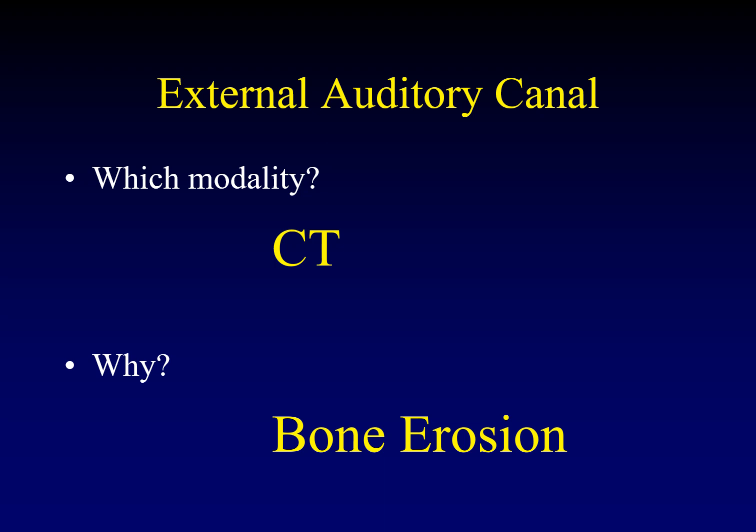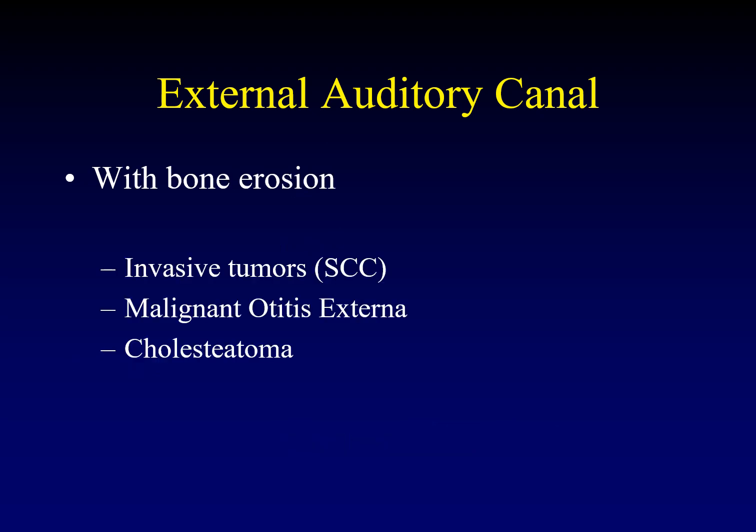When you see a mass or abnormality in the external auditory canal, the first thing your eyes should go to is the presence or absence of bone erosion. When bone erosion is present, we should be thinking about things like invasive tumors, squamous cell carcinoma on a mucosal surface, and malignant otitis externa — a famous cause of bone erosion in the external auditory canal, sometimes called necrotizing otitis externa. And then cholesteatomas.